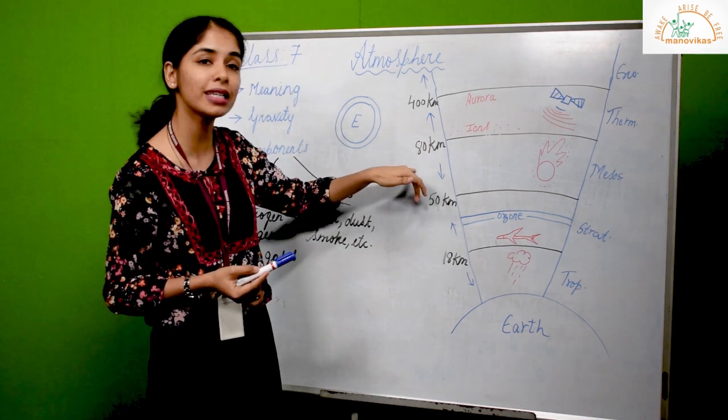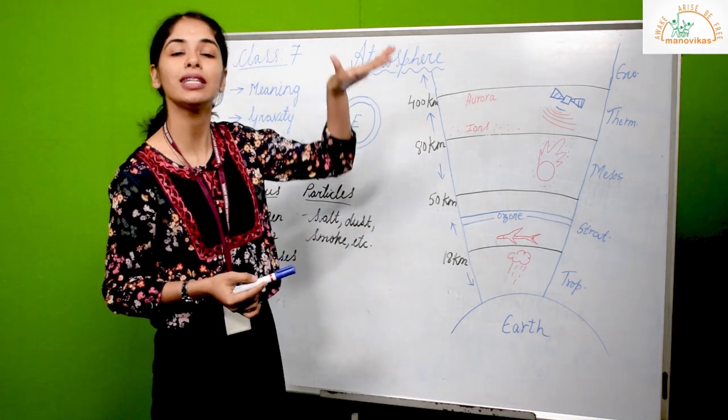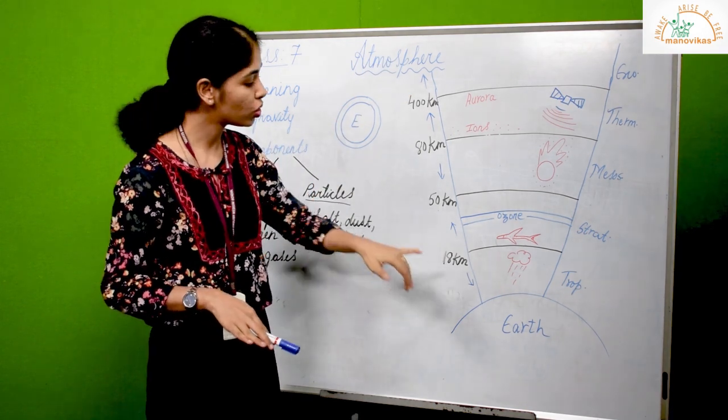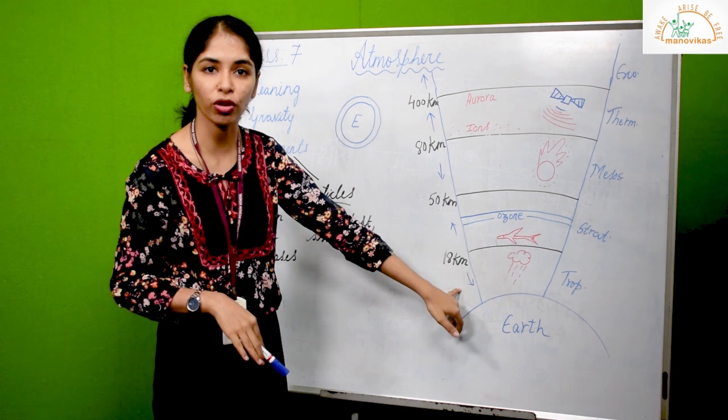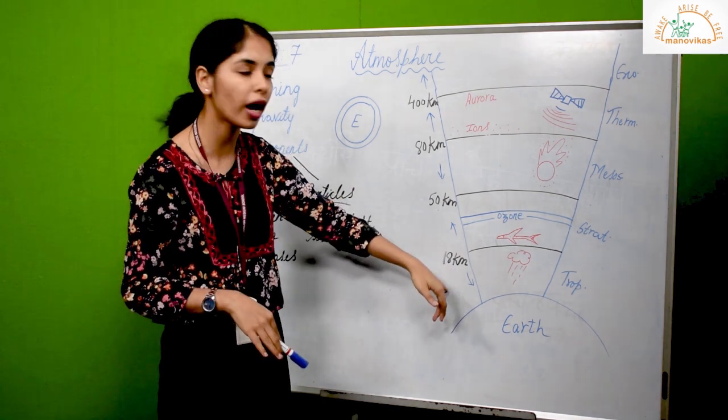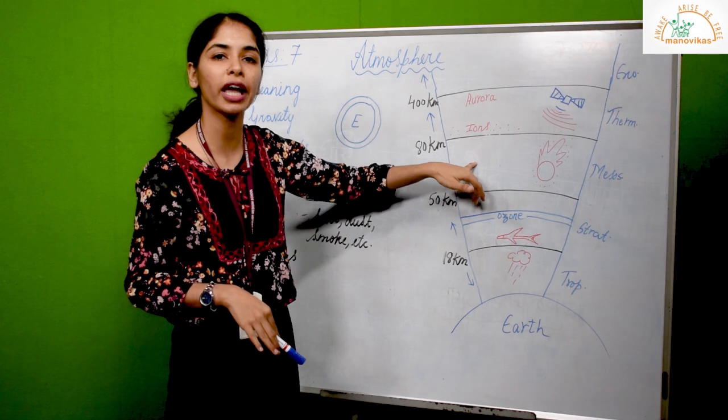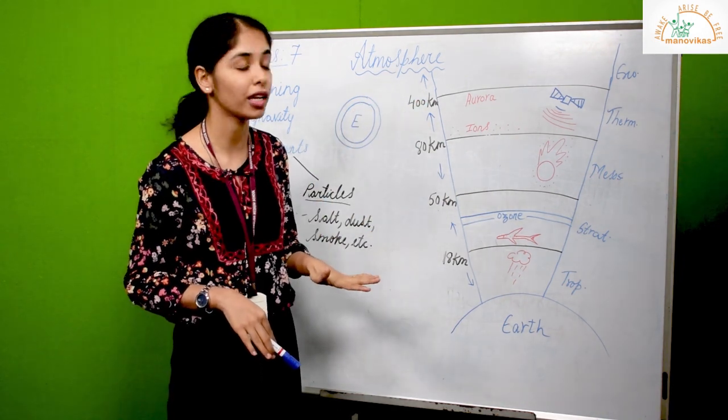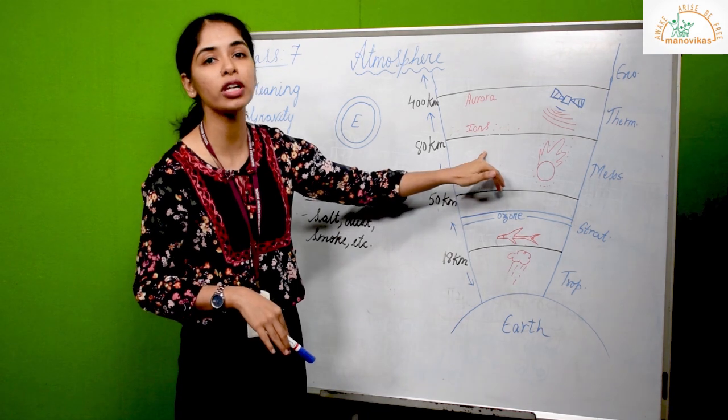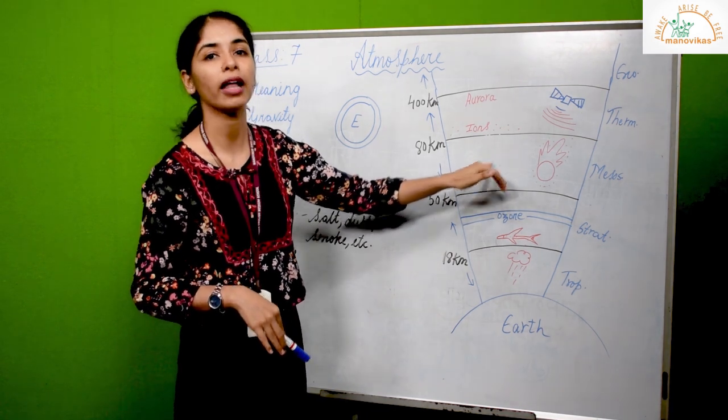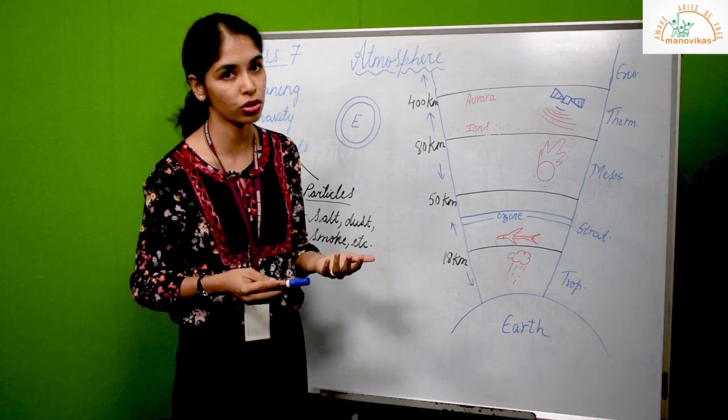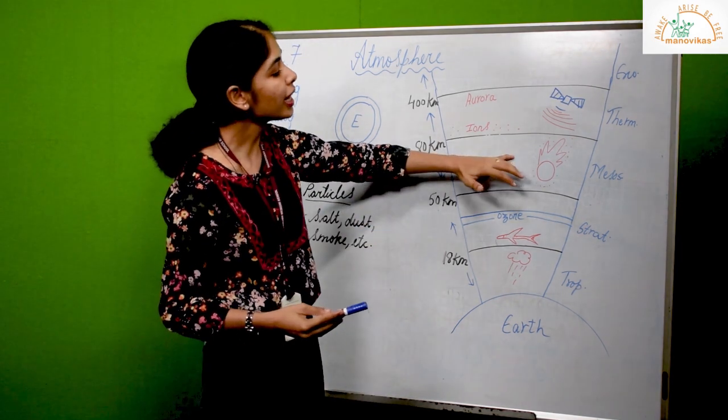In this layer, again with increasing height, temperature goes on decreasing. It's similar to troposphere. In mesosphere, with increasing height, temperature goes on decreasing. This is actually the coldest layer in the atmosphere, and the recorded temperatures are about minus 100 degrees Celsius.